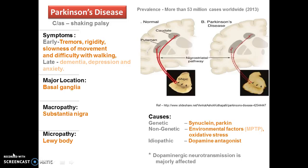Genetic causes include mutation of synuclein and parkin as major genes. Non-genetic causes include MPTP as an environmental factor and oxidative stress. Idiopathic causes like dopamine antagonists are also responsible for most Parkinson's disease. Macropathology includes atrophy of substantia nigra, and in micropathology we can see accumulation of Lewy bodies on dopaminergic neurons of the substantia nigra pars compacta region.